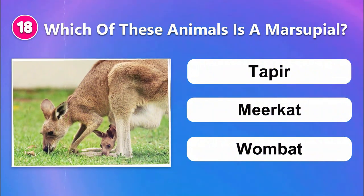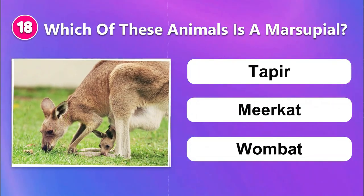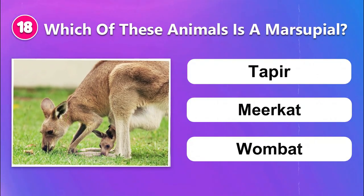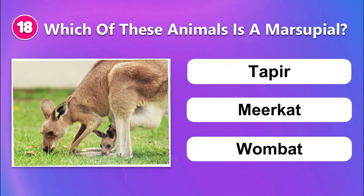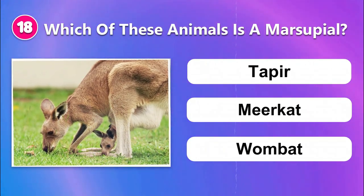Number eighteen: Which of these animals is a marsupial? Tapir, meerkat, or wombat.